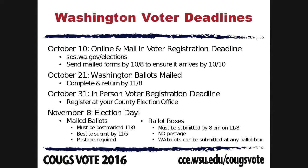Washington is strictly an absentee ballot state — you can go to your county election office to vote if you'd like, but the majority of voting happens via absentee ballot. You can expect to receive your ballot after October 21st and you need to return it by election day, November 8th. If you missed the online or mail-in deadline, you can register in person at your county election office — the deadline for that is Halloween, October 31st. If you're mailing it, make sure it's postmarked by November 8th, but it's best to get it in the mail a few days before.